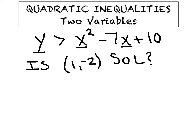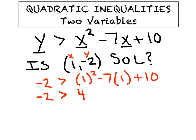As you might have guessed, we're going to substitute the 1 in for x and the negative 2 in for y. Thus, we have negative 2, is it greater than 1 squared minus 7 times 1 plus 10. We'll do a little cleanup on the right side. 1 minus 7 is negative 6, plus 10 is 4. And we ask ourselves, is negative 2 truly greater than 4? That is false. Therefore, our ordered pair 1, negative 2 is not a solution.